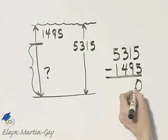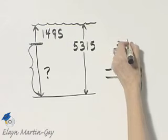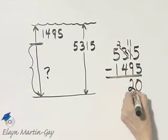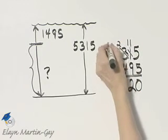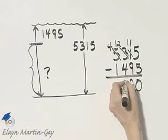5 from 5 is 0. Here I'll need to borrow. 11 minus 9 is 2. Again, I'll need to borrow. 12 minus 4 is 8.